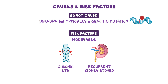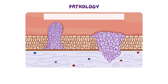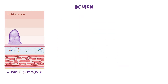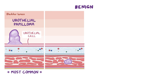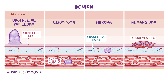The pathology of bladder tumors begins when a cell of the bladder wall becomes mutated and starts dividing uncontrollably, forming a tumor. The most common benign bladder tumor is urothelial papilloma, arising from a urothelial cell, followed by leiomyoma from smooth muscle, fibroma from connective tissue, and hemangioma from blood vessels. Benign tumors tend to grow as a single papillary outgrowth into the bladder lumen, as in urothelial papilloma, or toward the outer wall, as in leiomyoma.